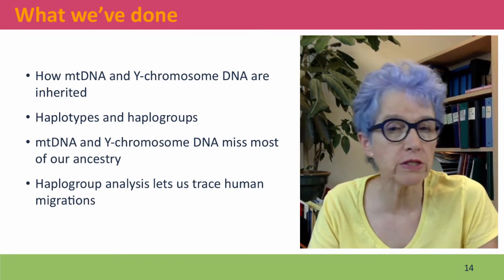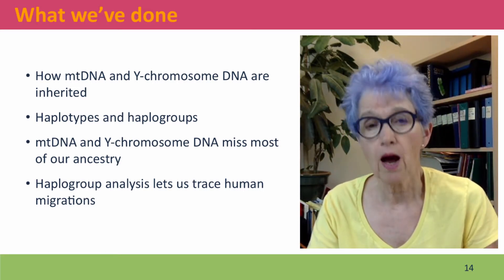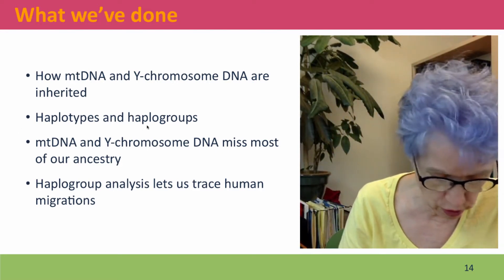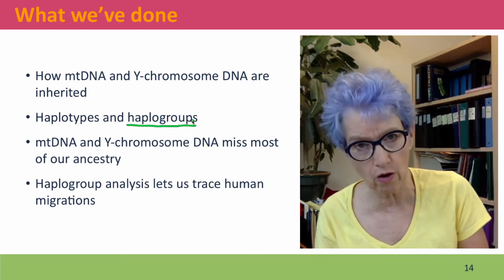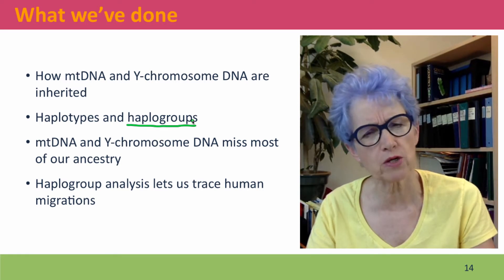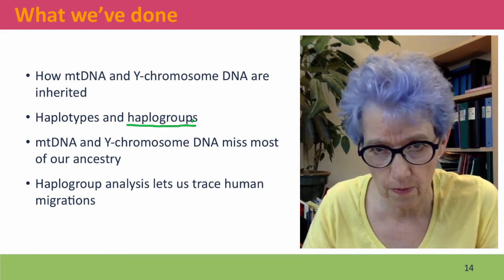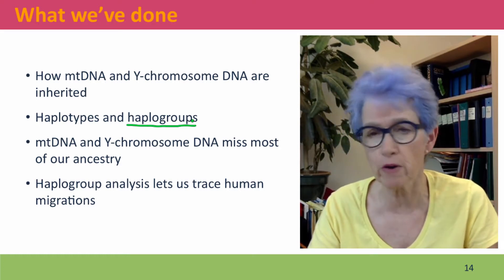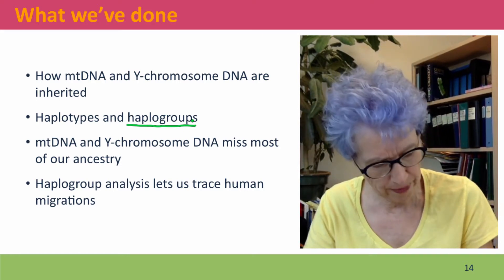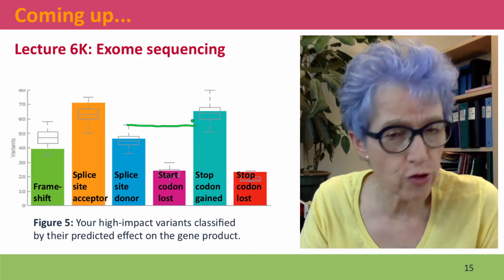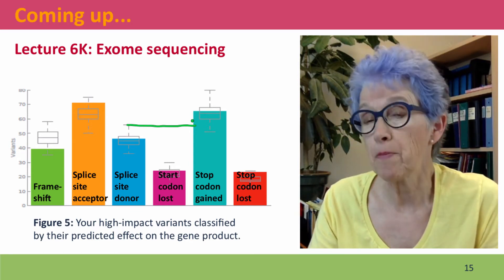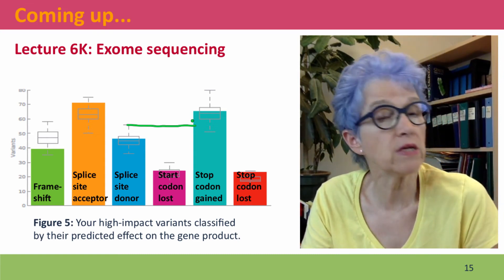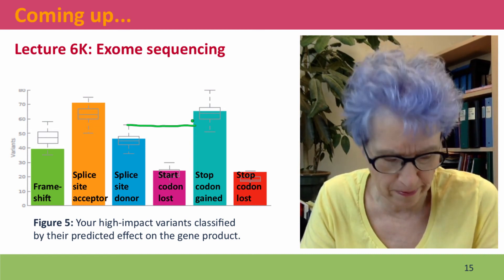We've talked about how mitochondrial DNA and Y-chromosome DNA are inherited through the strictly maternal and strictly paternal lines respectively. We've introduced the new term haplogroup. We talked about how mitochondrial DNA and Y-chromosome DNA miss most of our ancestry, but are very powerful tools for examining human evolutionary history. Coming up next, we're going to think about a different kind of analysis — sequencing both the exome, which we'll define, or the whole genome, to find out information about your genotype and predicted phenotype. I hope to see you there.